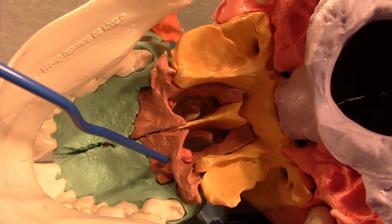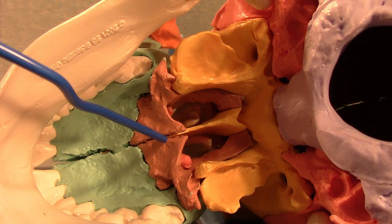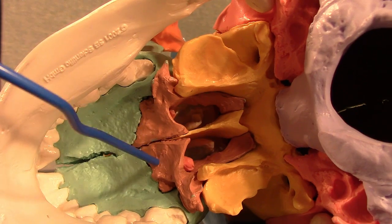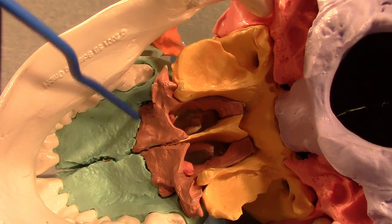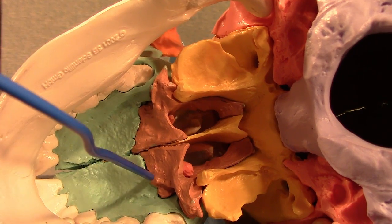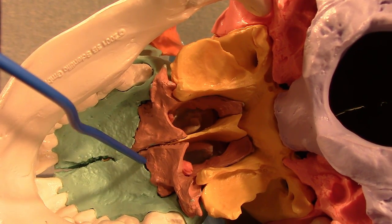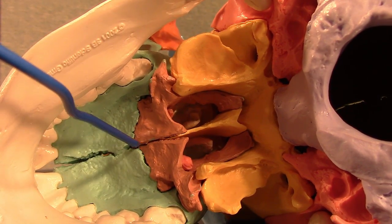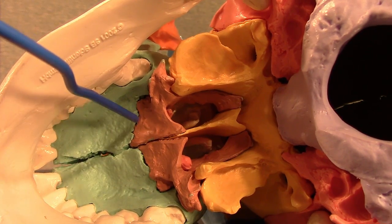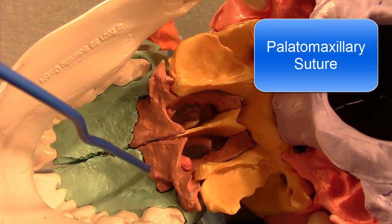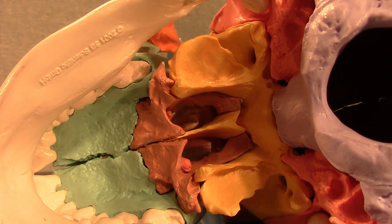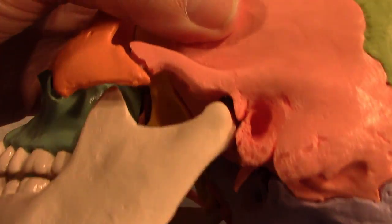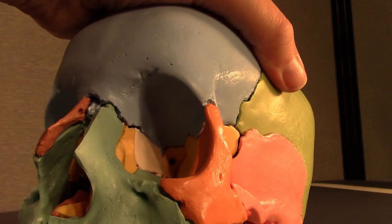Back to the hard palate — that's the horizontal plate of the palatine bone again. It has a suture here called the interpalatine suture. The palatine bones meet the maxilla in this suture right here, and when it comes to naming, the maxilla is always last — so this is called the palatine maxillary suture.